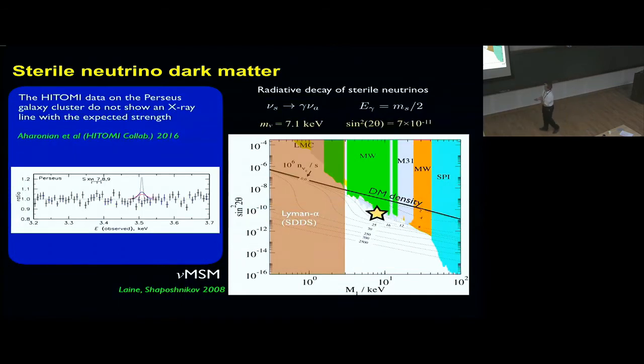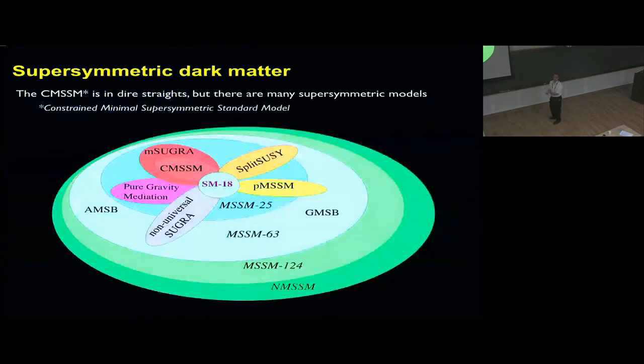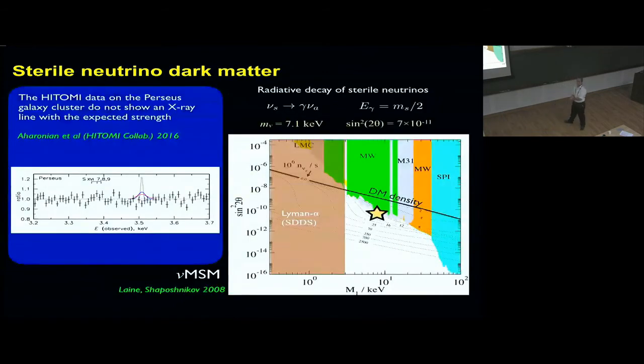This line has been tested by the Hitomi satellite, which unfortunately was lost. But early data on the Perseus cluster do not show an X-ray line with the expected strength. So the jury is still out. We don't know if there is a 3.5 keV line at any significant level, and beyond that, if it is due to sterile neutrinos.